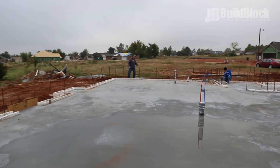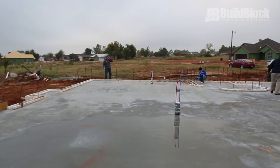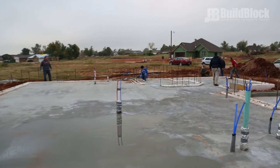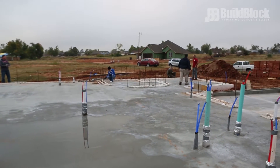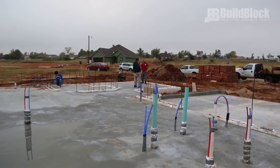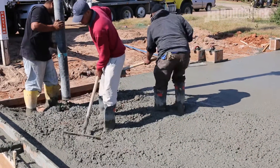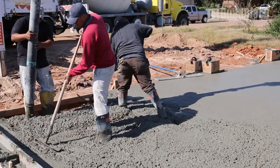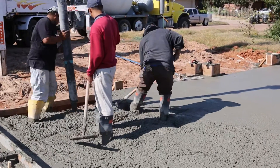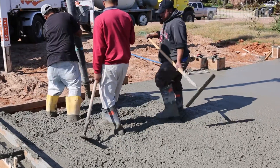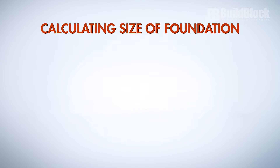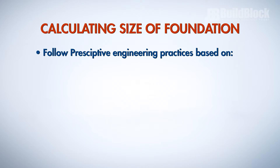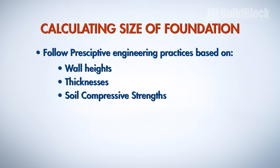Slab-on-grade foundations are used when the concrete slab that is to be the foundation is formed and set directly on the ground. This slab may use post-tension or have thickened edges to support BuildBlock ICF forms. As you calculate the size of the foundation, you will need to follow prescriptive engineering practices based on wall heights, thicknesses, and soil compressive strengths.